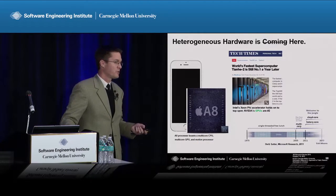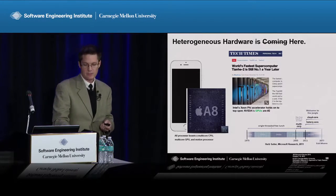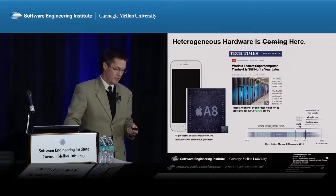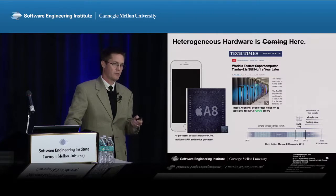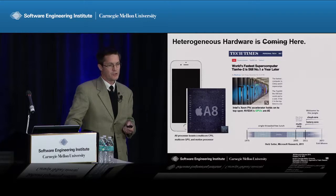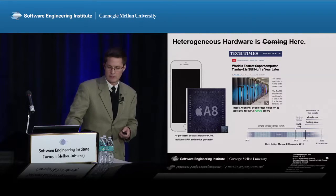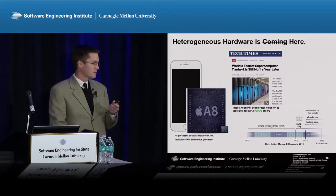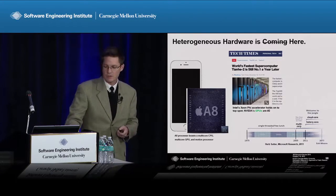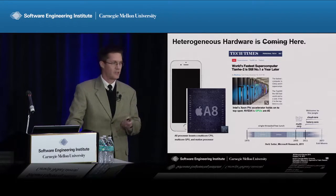The most powerful supercomputer in the world is in China. It has millions of CPU cores, but it also has accelerators — the Xeon Phi. Number two on that list uses NVIDIA GPUs as accelerators. These are extremely complicated hardware architectures to program. You even have one in your pocket if you're walking around with an iPhone 6 — it has an A8 multi-core processor, a multi-core GPU, and a motion processor.